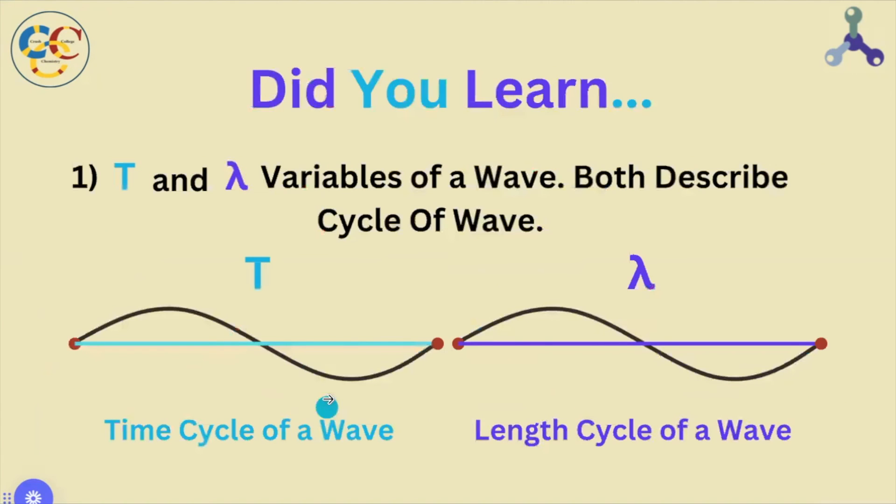So did you learn the following? Wavelength and period are variables of a wave, which both describe a cycle or a single repetition of a wave.